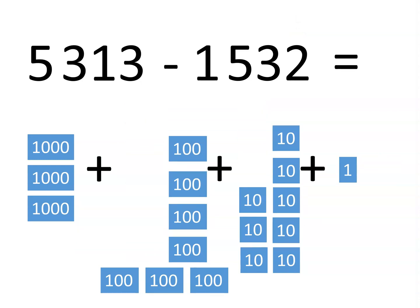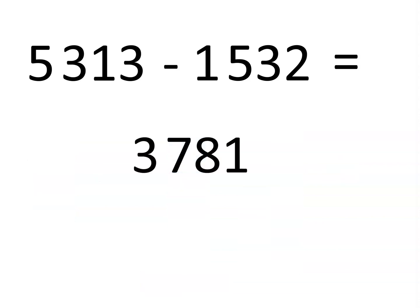Now count up what remains in each digit. Do you see how we have 3 thousands, seven hundreds, eight tens, and one unit? This means that our difference is 3,781.